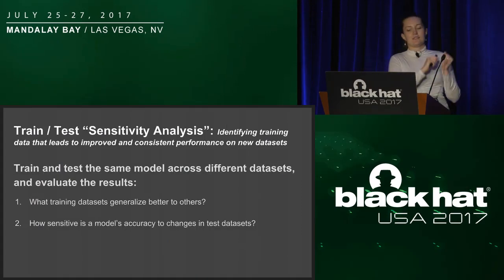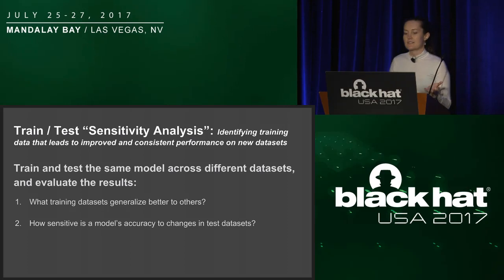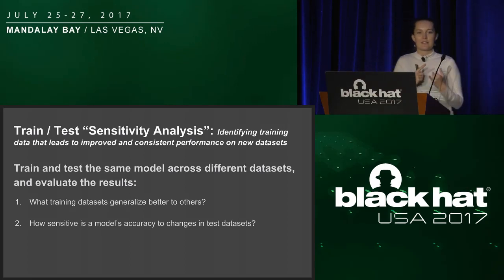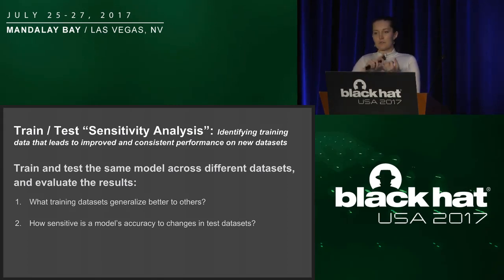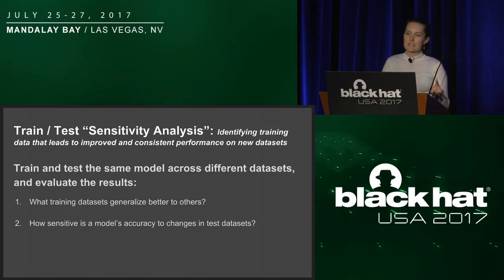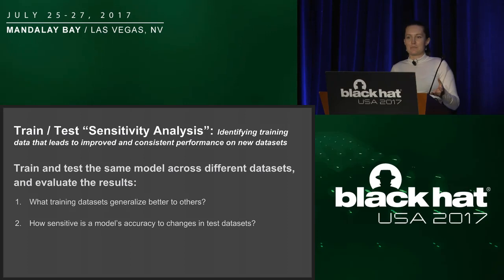So how do we stop this from happening? This brings us to the train-test sensitivity analysis. The basic idea is to train and test the same model across different data sets and evaluate the results. First, it's going to help us identify training data sets that yield models that not only do well on their own test sets but on other data sets' test sets — training data sets that yield models that generalize really well. Second, it's going to help us estimate how sensitive a model's accuracy is to changes in test data sets, hopefully identifying training data sets that will give us models that perform reliably and accurately on deployment.